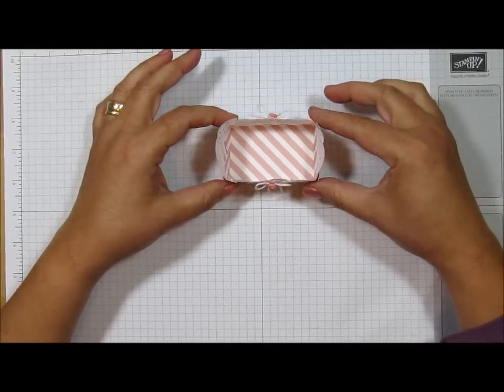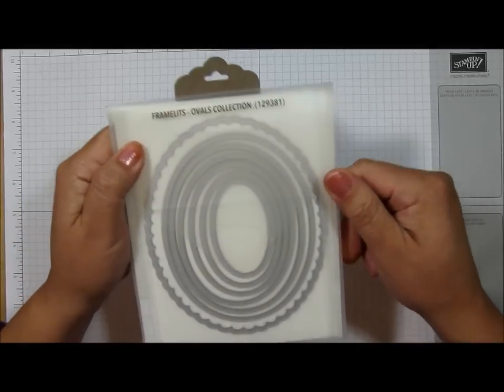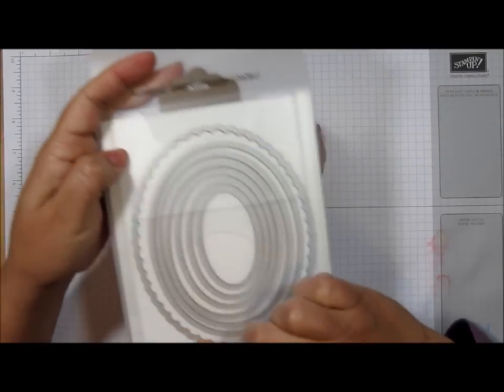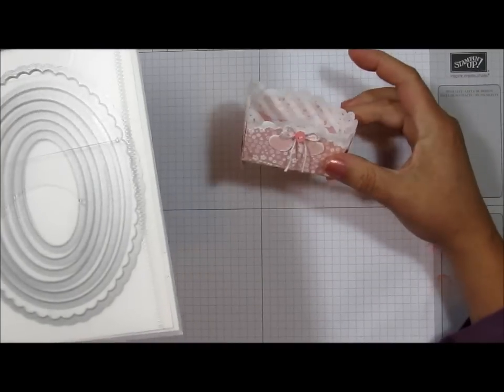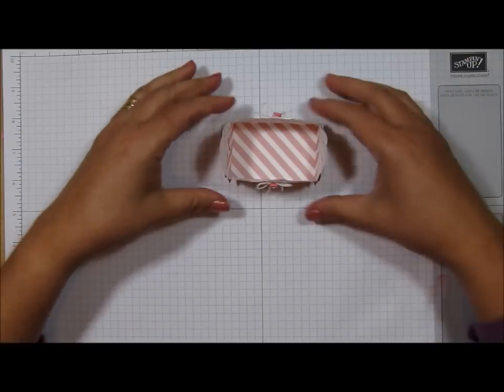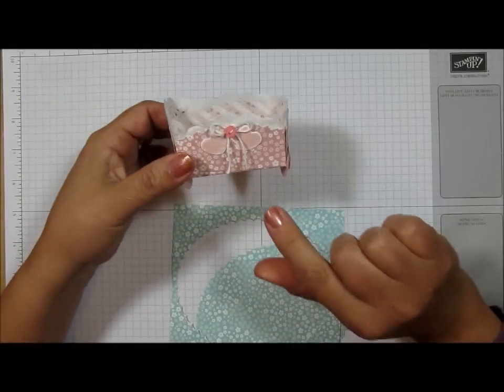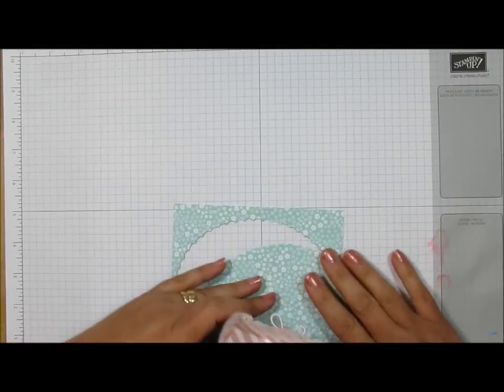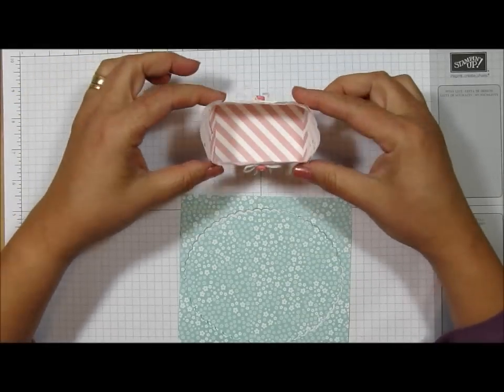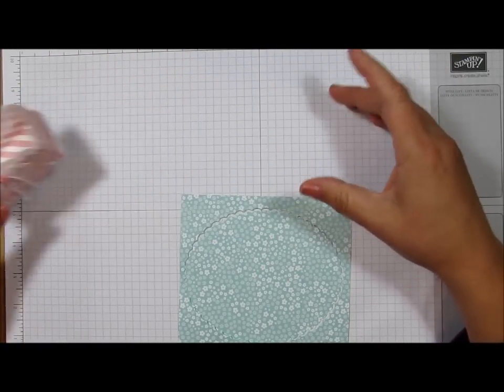I'm making use of the framelits, the oval collection. I'm going to be using that large scallop to make the base for this little rocking baby cradle. What you're going to need first of all is a piece of DSP. This one is Blushing Bride, and I think I'm going to use the pool party because I don't know if it's a girl or a boy yet. So let's get started.